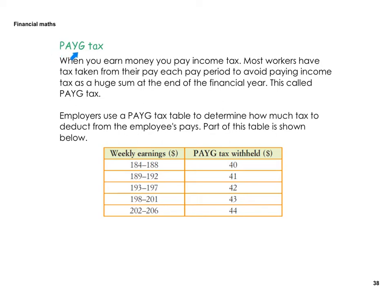Next topic: PAYG tax — Pay As You Go tax, that's what it stands for. In Australia, when you earn money you pay income tax. Most workers have tax taken from their pay each pay period to avoid paying income tax as a huge sum at the end of the financial year. This is called PAYG tax — basically every pay slip you get, some money will be taken out as tax throughout the entire year.